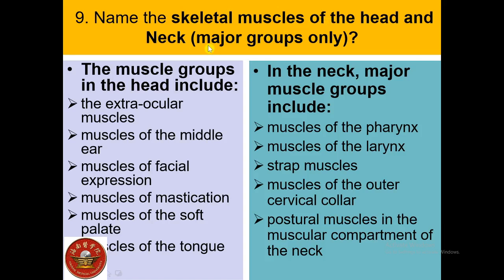The skeletal muscles of the head include: extraocular muscles, which move the eyeball and open the upper eyelid; muscles of the middle ear, which adjust the movement of the middle ear bones; muscles of facial expression, which move the face; muscles of mastication, which move the jaw at the temporomandibular joint; muscles of the soft palate, which elevate and depress the palate; and muscles of the tongue, which move and change the contour of the tongue.